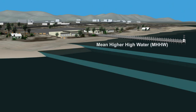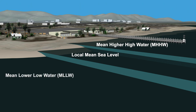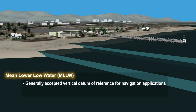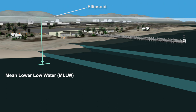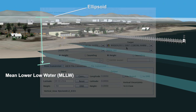Tidal datums are local reference planes defined from water level observations. For navigation applications, the generally accepted vertical datum of reference is Mean Lower Low Water, the average of the lowest daily tides over the 19-year period referred to as the National Tidal Datum Epoch. So, we need to transform our elevation information from an ellipsoid reference to Mean Lower Low Water to best support navigational needs.